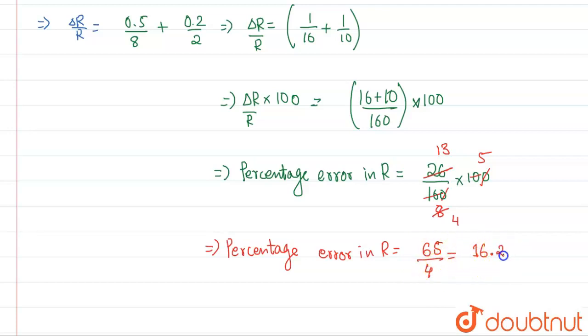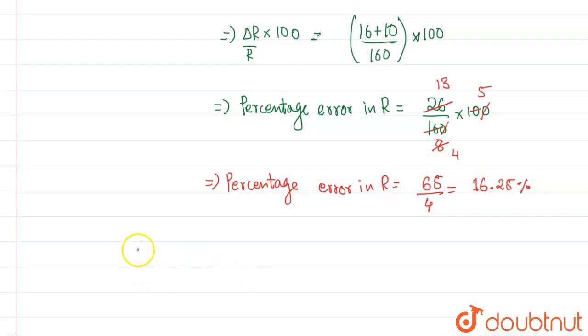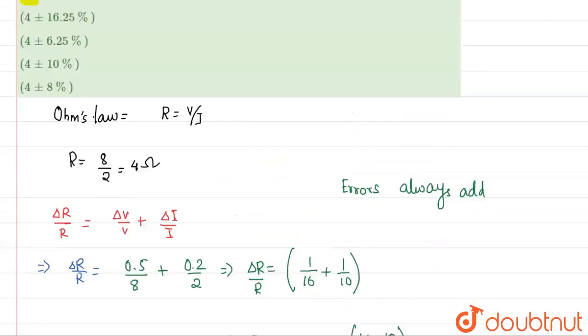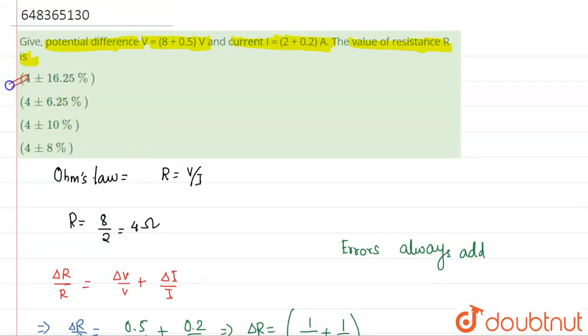And there will be 0.25 percent. So 16.25 percent. So R, if you find out, R net will come out to be 4 plus minus 16.25 percent. Got it? So our answer will be option number A, clearly that is the perfect match to our answer. Got it? Thank you.